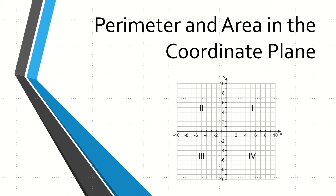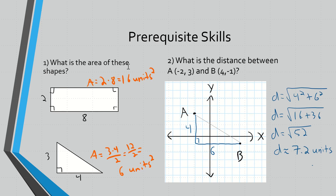So just a few quick prerequisite skills you should know before we get into this. You should know how to find the area of a rectangle and a triangle. For a rectangle it's pretty straightforward — it's just base times height. So here this would be 8 times 2 which gives you an area of 16 units squared. For the triangle, that's going to be 3 times 4 divided by 2 because a triangle is half of a rectangle, so you get 3 times 4 divided by 2, which is 12 divided by 2, which is 6 units squared.